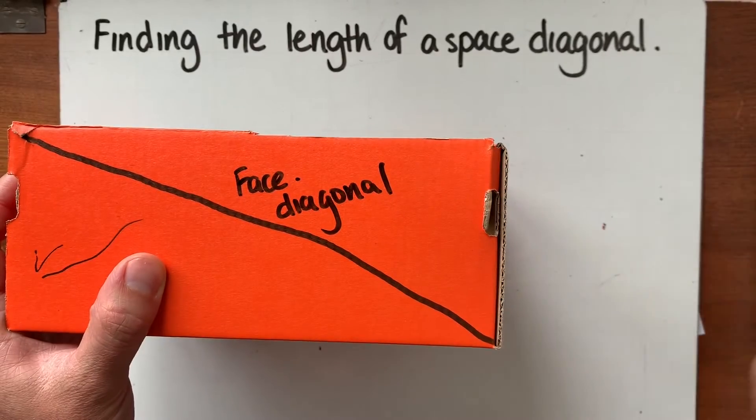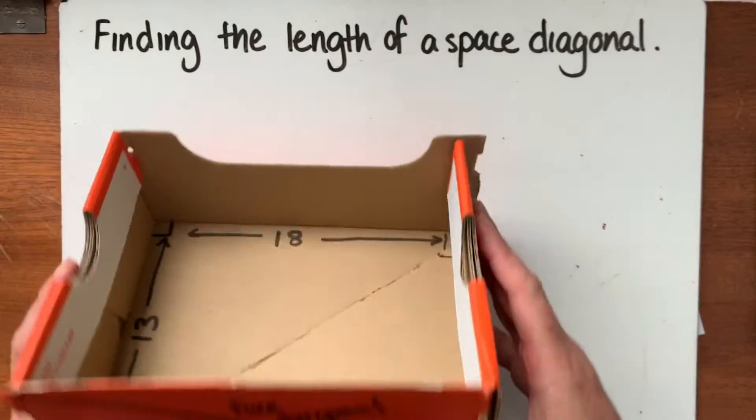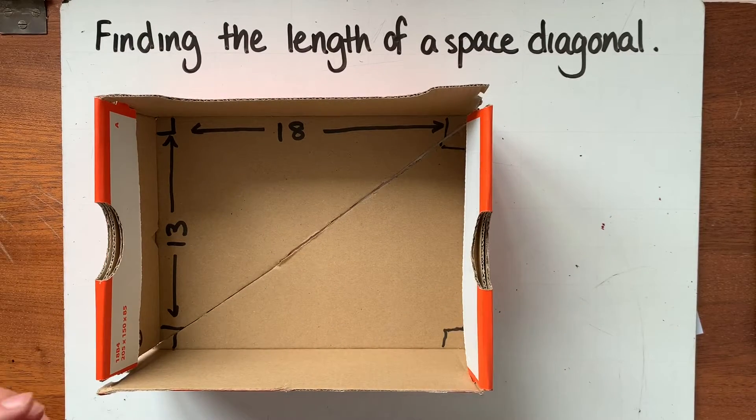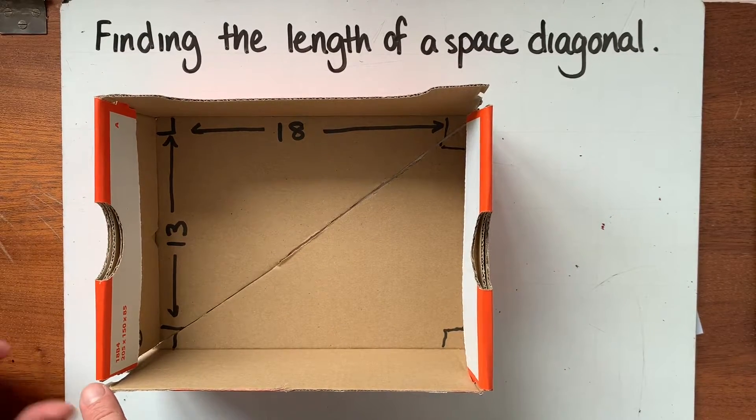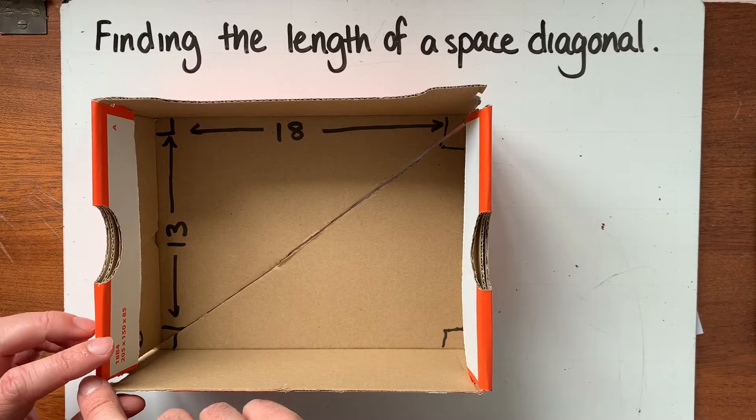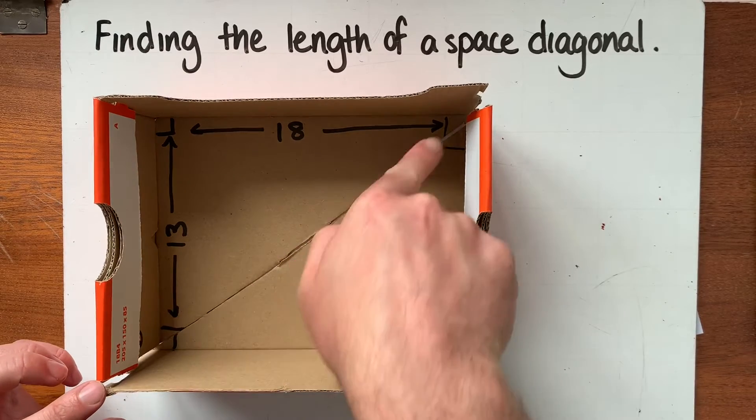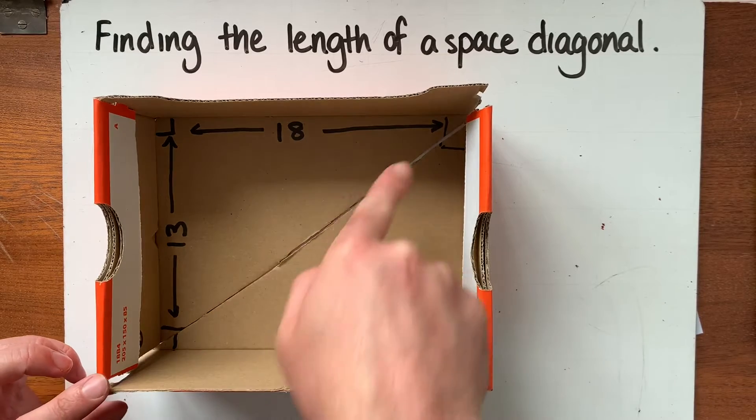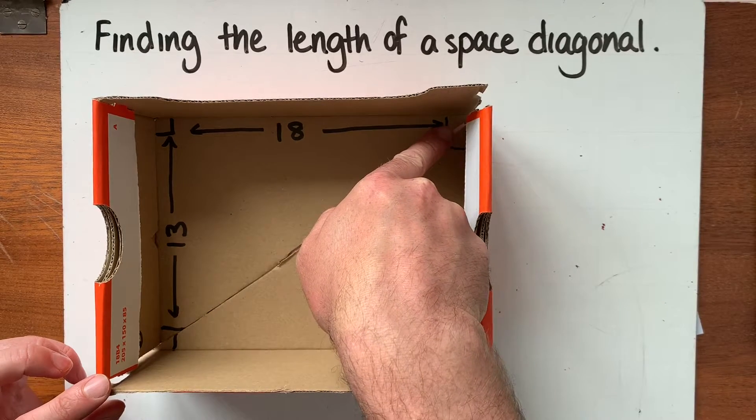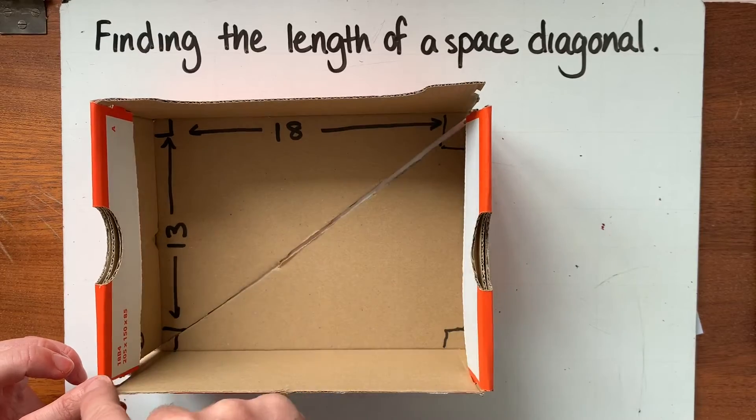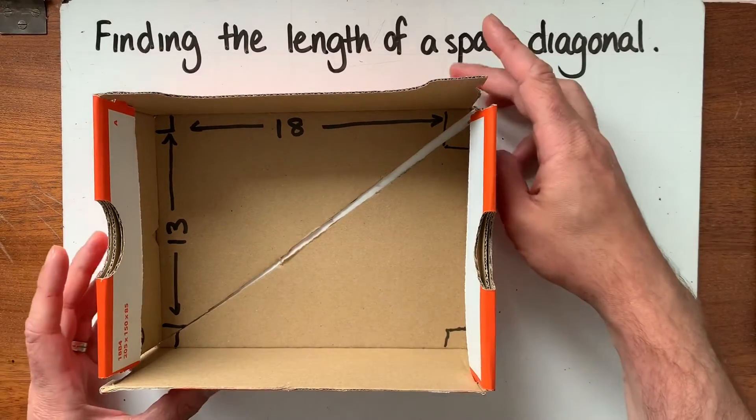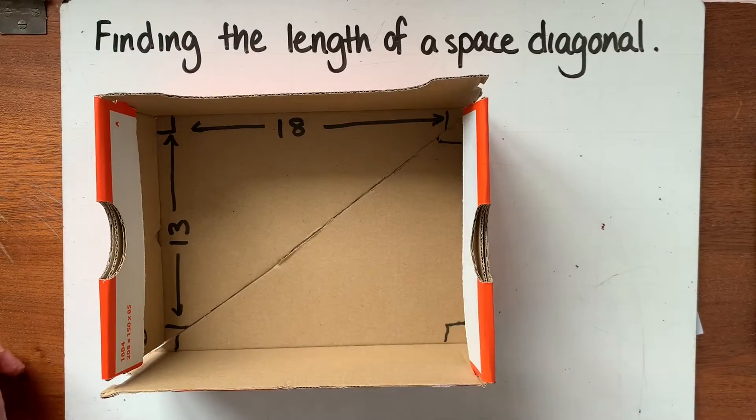So that's a face diagonal but we are interested today in finding a space diagonal. Now a space diagonal is a diagonal that goes from one vertex, one corner of our cuboid to the diagonally opposite corner. So if I'm starting at the top corner here it goes to the bottom corner and diagonally opposite and it goes through the space in the middle of the cuboid.